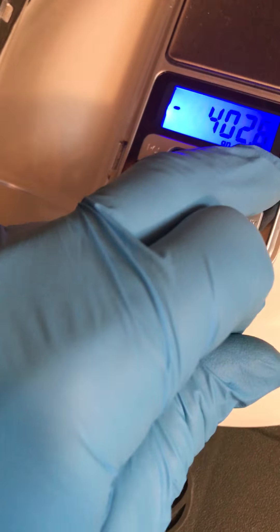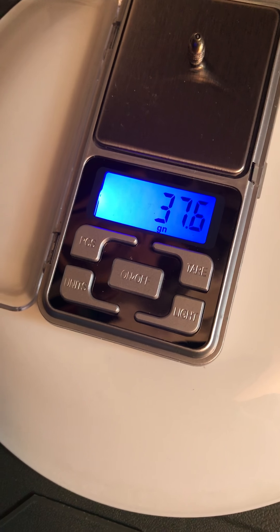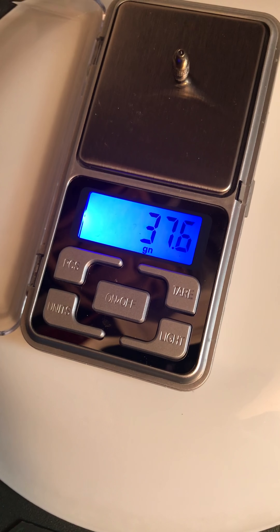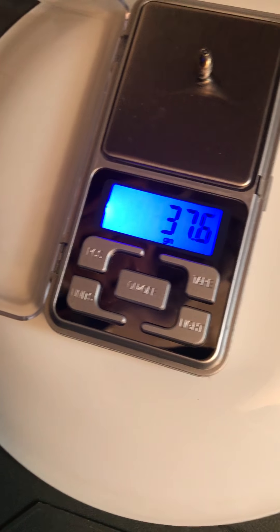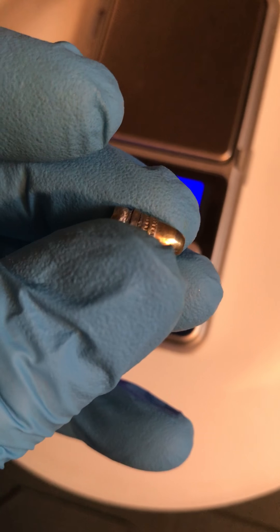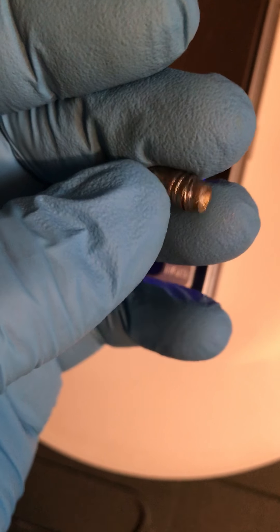Let's try that again. We'll tare it all out. 37.6 grains. So it weighs 1.6 grains over, which is a little unusual. Most of the time the bullet weighs a little bit under a grain or so under, not over.